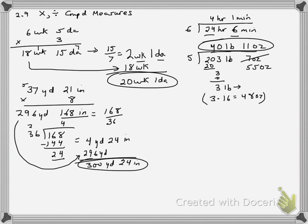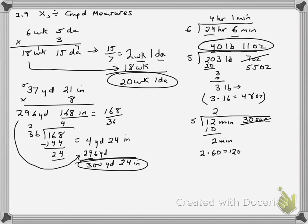Here's another division example. 5 goes into 12 two times, giving 10 with remainder 2. I need to convert these 2 minutes into seconds. There are 60 seconds in 1 minute, so 2 times 60 is 120, and I add that to the 30 seconds already there, giving 150 seconds. Dividing 150 seconds by 5: 5 goes into 15 three times with a 0, giving 30. So the answer is 2 minutes 30 seconds.